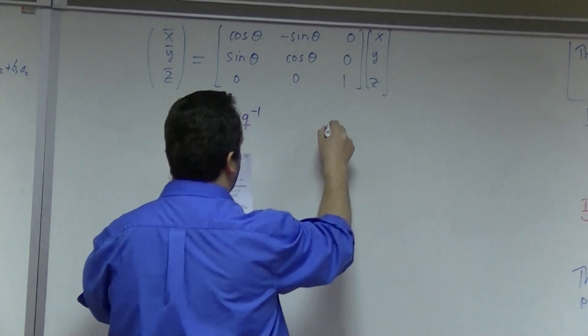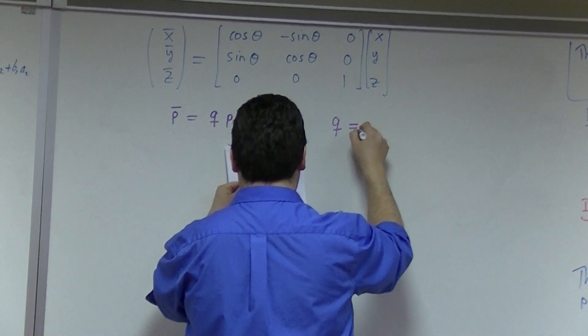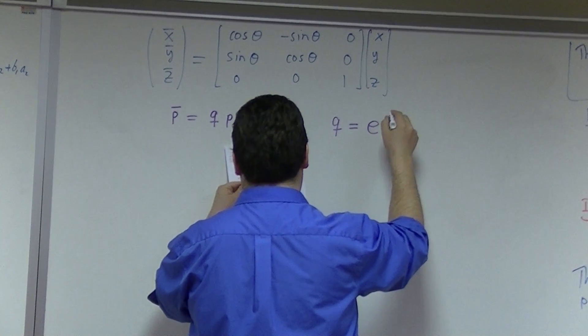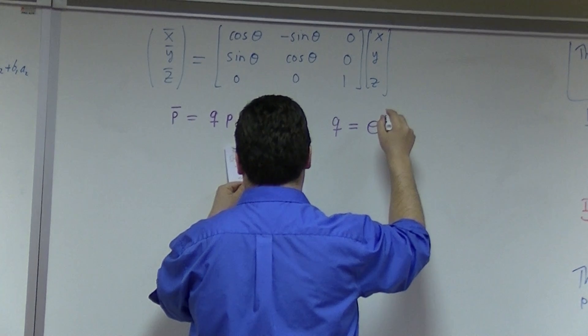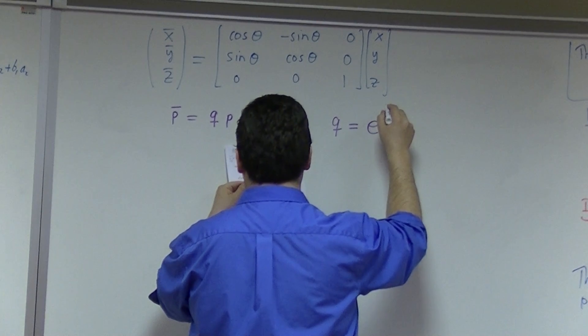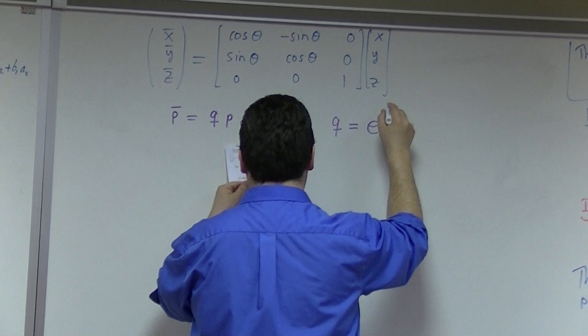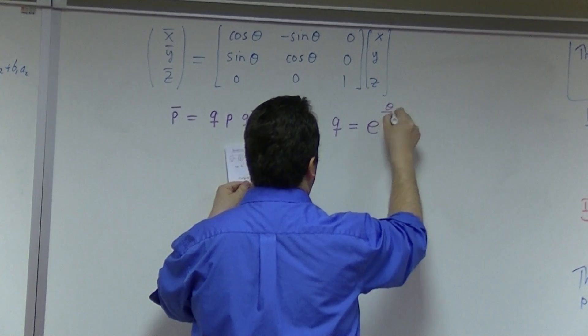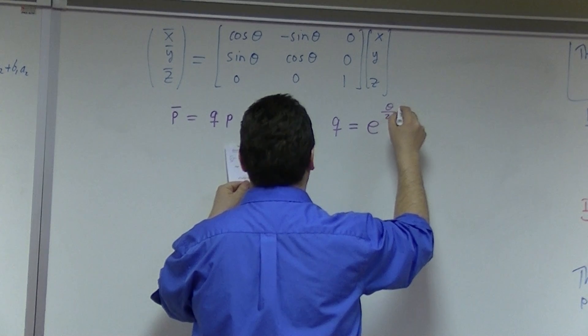And then here, the Q is the rotation, and it is built as e to the, let's see here, getting straight to the point, e to the theta over 2, for us, k.